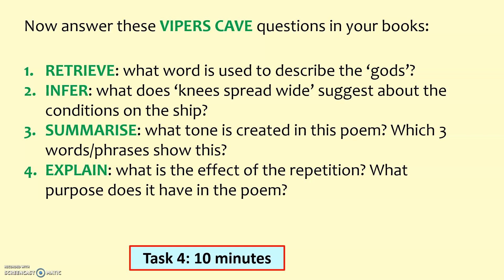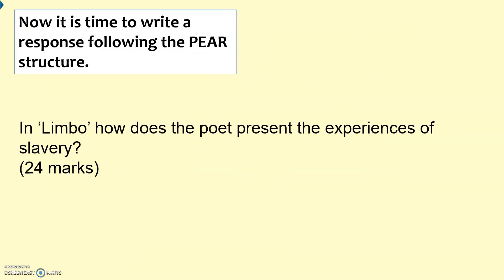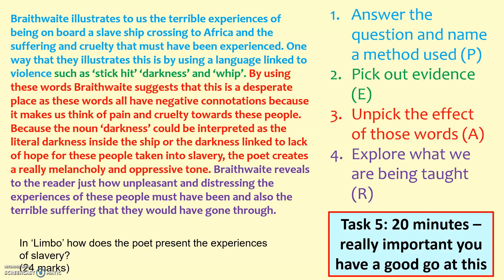Thank you for having a go at that. Now it's time to write a response — this is where it gets really important because this is as close as it comes to the GCSEs. Have a look at that question on the screen: in Limbo, how does the poet present the experiences of slavery? The key words are 'how does the poet present' — so what methods does the poet use — and then 'the experiences of slavery' is the key focus of the question. That poem is all about slavery, about being stuck on the ship, and you've got that real feeling of repetition going on — maybe being stuck.